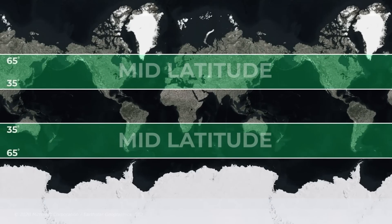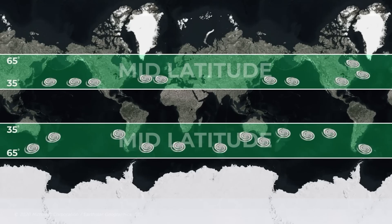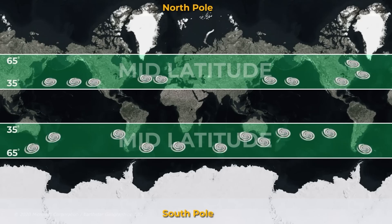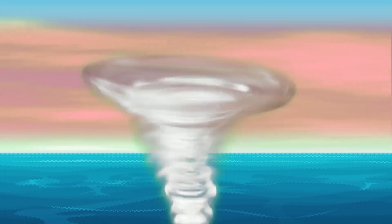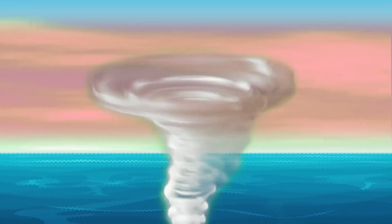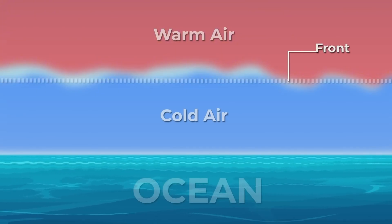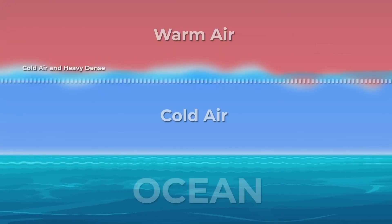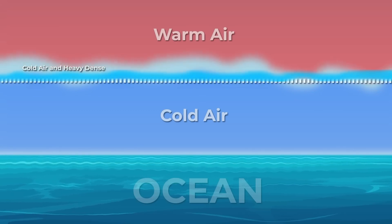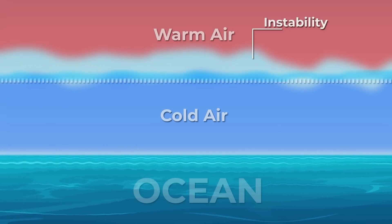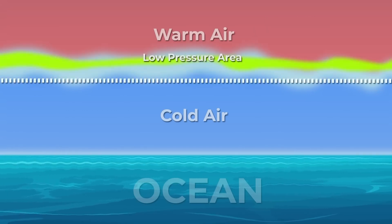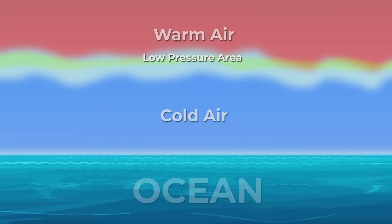The temperate cyclone originates between 35 to 65 degrees latitude on both the north and south sides. These cyclones move from west to east and are more likely to form during winters. Unlike tropical cyclones, temperate cyclones form during the meeting of polar and tropical air masses. The meeting of these air masses forms fronts, where the warm air mass rises and the cold air mass sinks, creating a low pressure area that attracts air from the surrounding atmosphere.